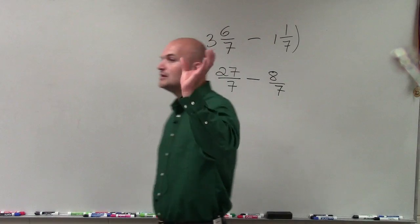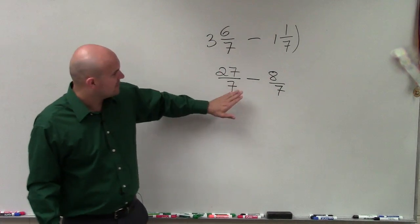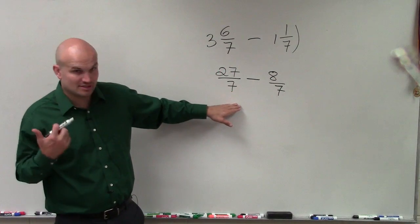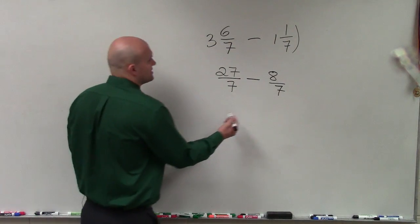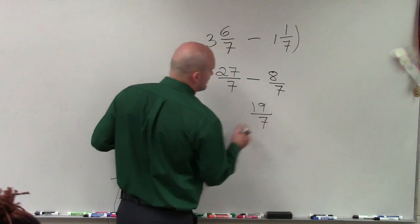Whenever you're subtracting fractions or adding fractions, you've got to make sure you have common denominators, which in this case we do. And then you subtract the numerator from the other numerator. So 27 minus 8 is going to be 19 over 7.